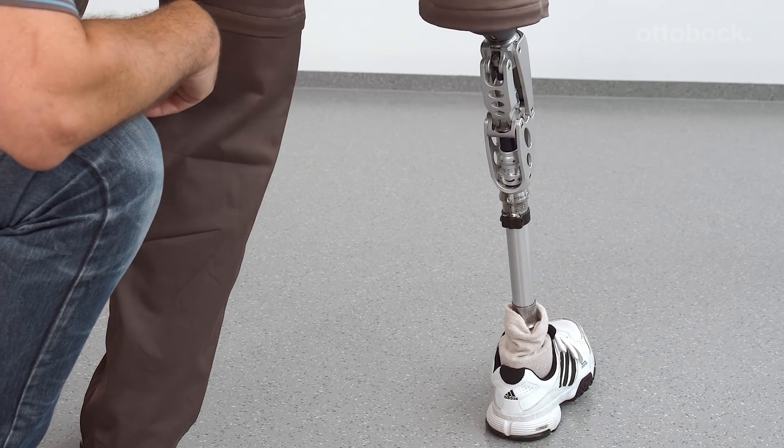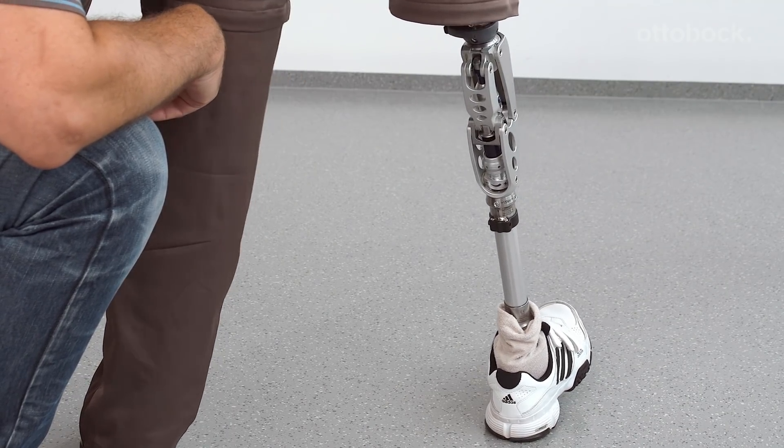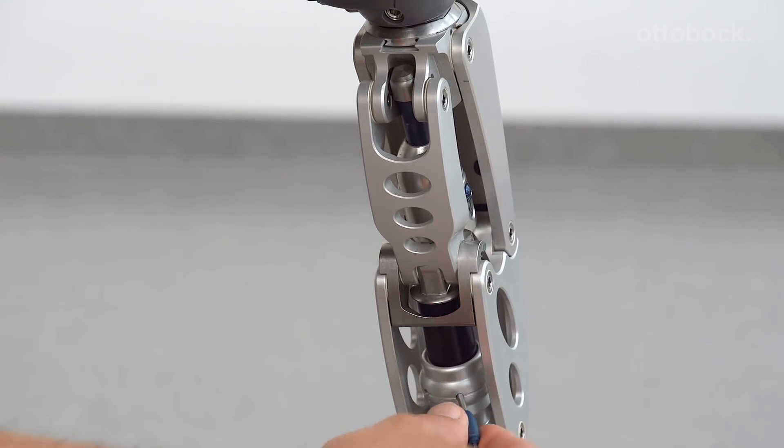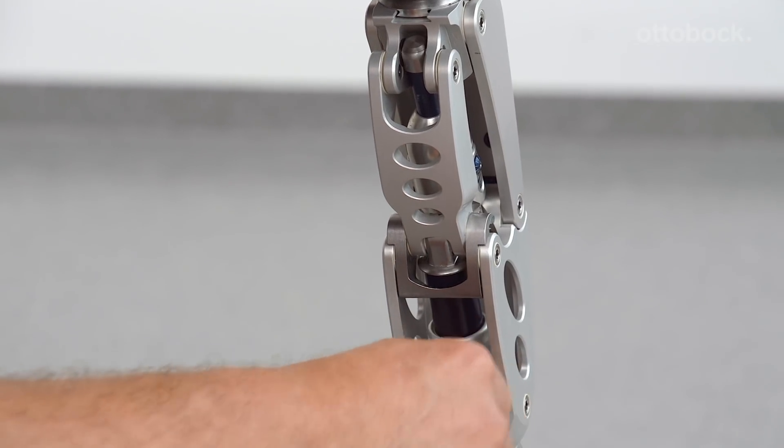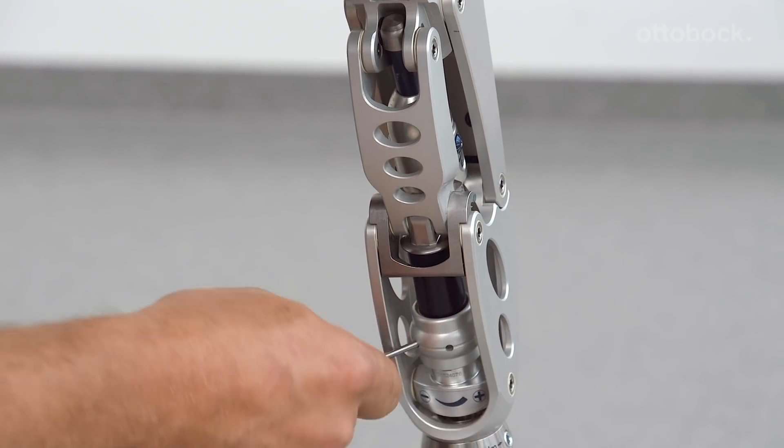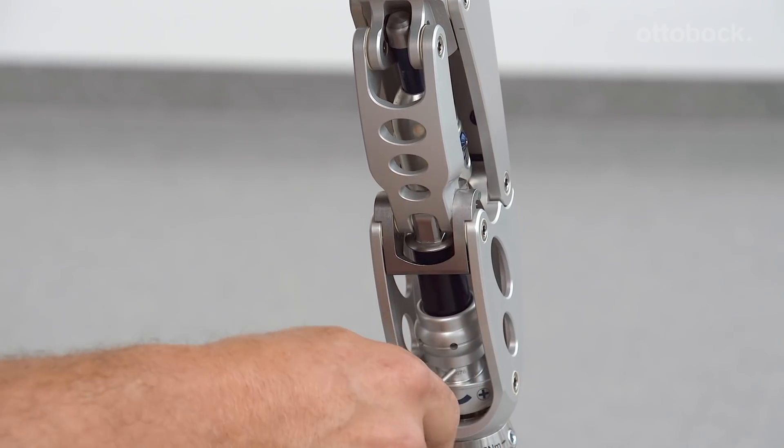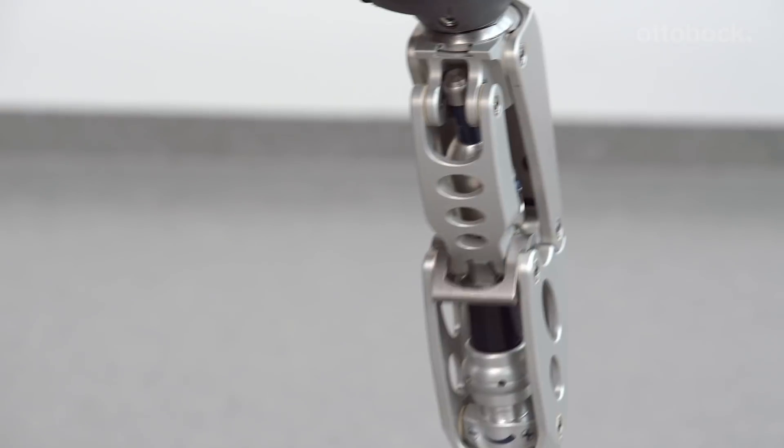At stance phase flexion, the blue rubber bumper is compressed, causing the pivoting mount to move up and generate resistance. The pivoting mount serves as a visual control for measuring the efficiency of the EBS unit. The hydraulic component of the EBS unit dampens the subsequent stance phase extension.